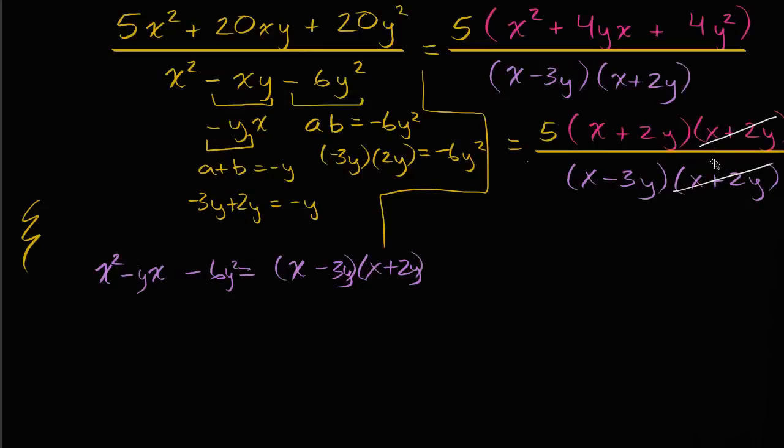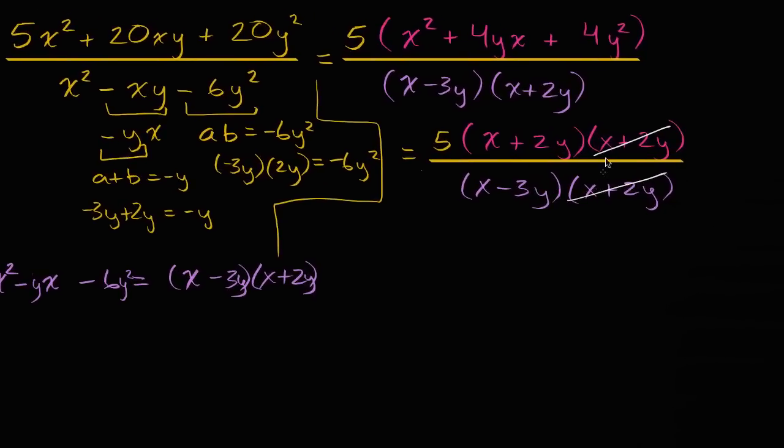And that's actually an important constraint, because once we cancel this out, you lose that information. And if you want this to be algebraically equivalent, we could say that x plus two y cannot be equal to zero. Or another way you could say it is that x cannot be equal to negative two y. I just subtracted two y from both sides there.